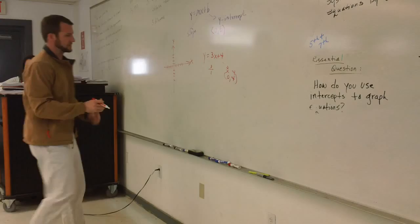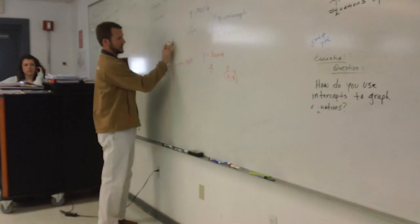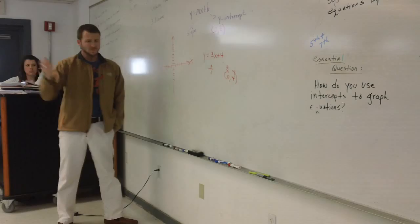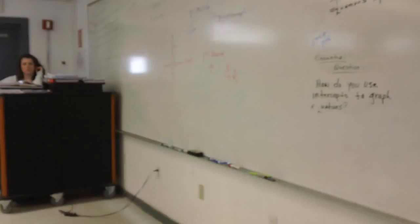So, (0, 4), up 4. Now from there, what do I do? I didn't get my graph quite correct. We're going to move up a little bit. And we're going to change in y or rise 3, correct? Because it's a positive slope. 1, 2, 3, and to the right one.